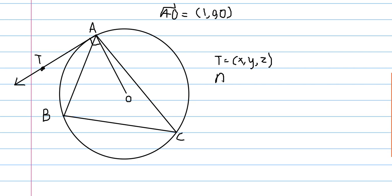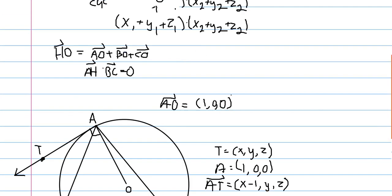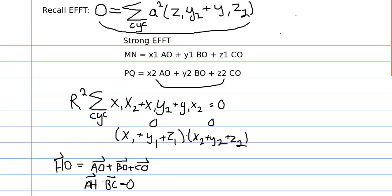And we have that A is equal to one, zero, zero, normalized. So, then we can get the displacement vector, which is x minus one, y, and z. And we know that these sum to zero. And we have this vector, which sums to one, but this one sums to zero. So, we can use strong EFFT.